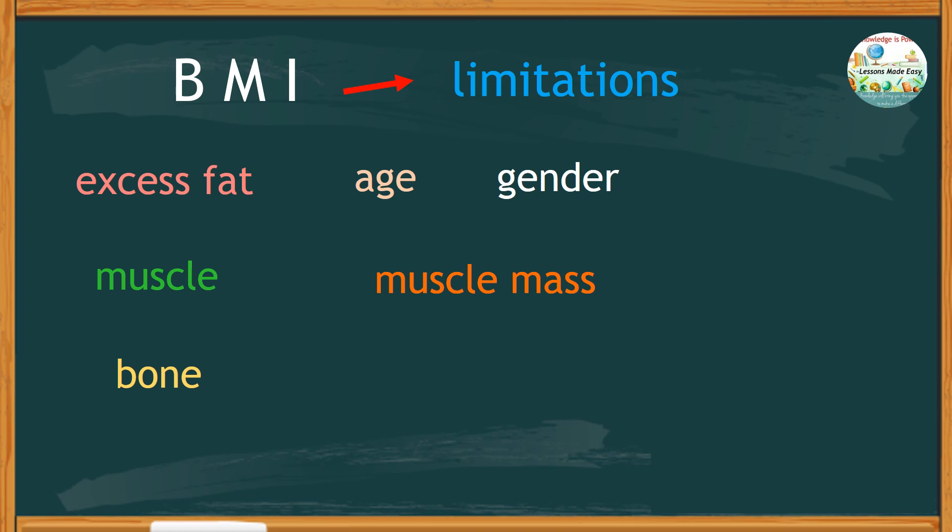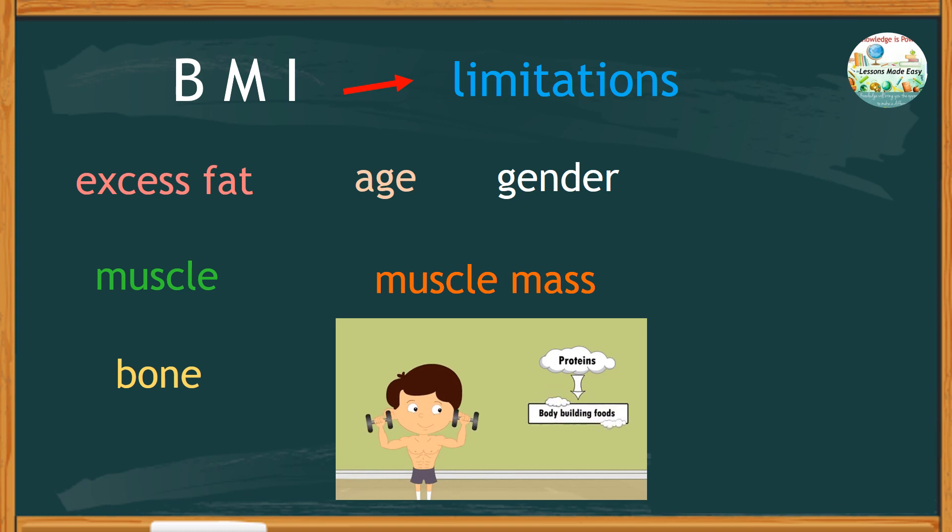This means very muscular adults and athletes may be classified as overweight or obese even though their body fat is low. Adults who lose muscles as they get older may fall into the healthy weight range even though they may be carrying excess fat. Pregnancy will also affect a woman's BMI result because as the weight increases your BMI will go up as well.